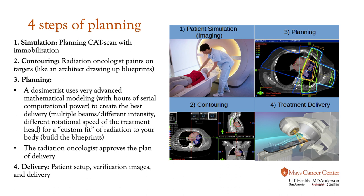Step three is we work with a team of physicists and dosimetrists that help us plan how to get the precise amount of radiation to the target. Every patient is different, and we are now precise enough to fit treatments to patients' bodies and their specific tumors — calling this essentially a targeted therapy. Then, number four, after we've planned and done quality assurance on a phantom to confirm everything we're planning to give is being given, we set the patient up on the machine and administer the treatment.